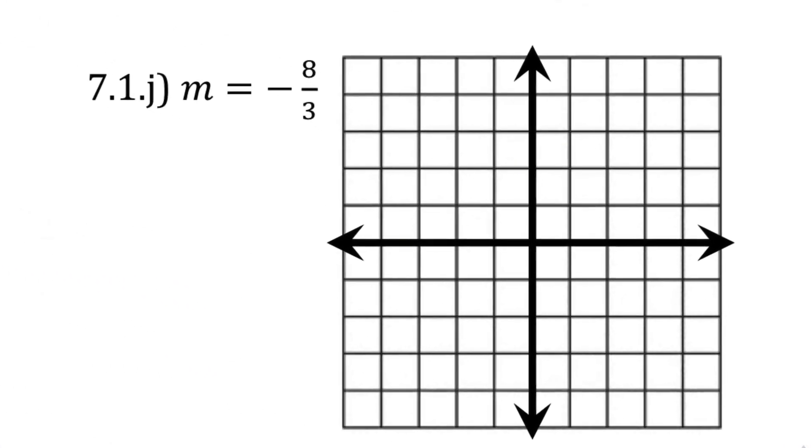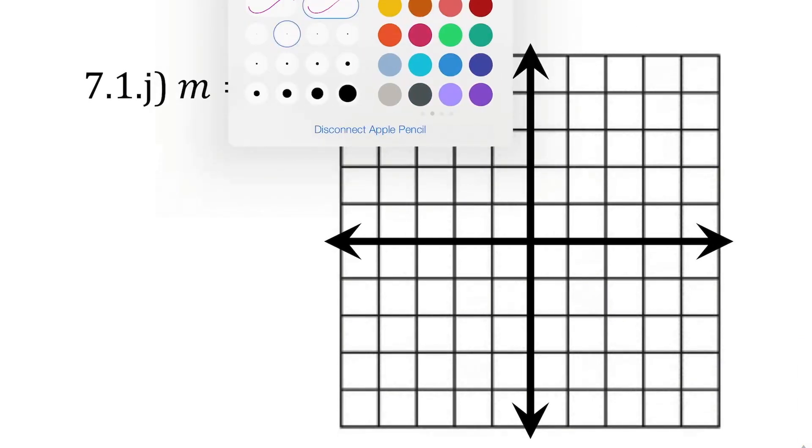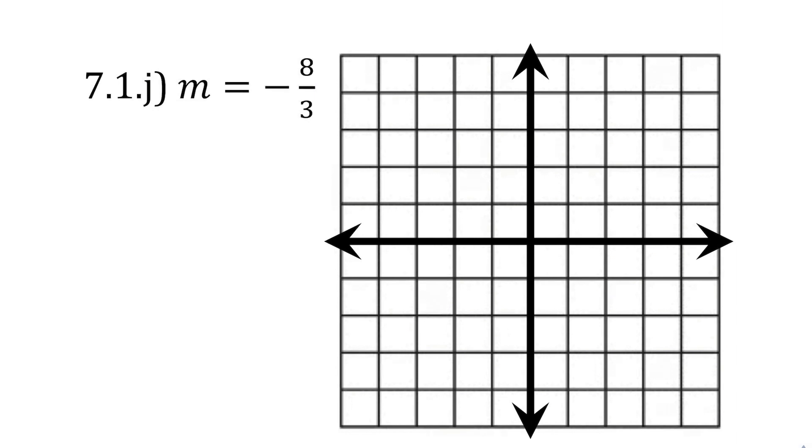One final example. This deserves a completely new color. This rise is huge! I mean, hugely negative, but huge nonetheless. Negative 8. So, I probably don't want to start here, because I'm not going to be able to go down 8. That's rough. So, I'll start maybe here. That seems like a good spot. And I'll go down 8. I haven't been counting. I'll just assume that's good. And I'll run over at 3. And I'll always play connected dots with this perfectly straight and slightly thicker line. Good job!